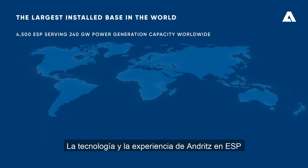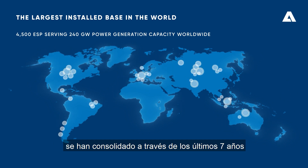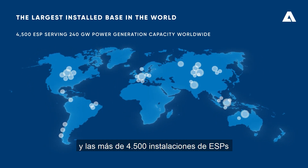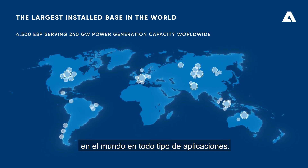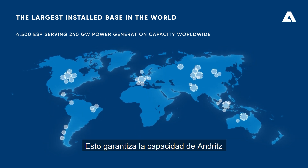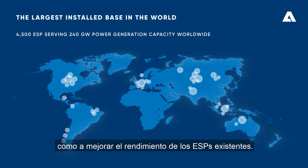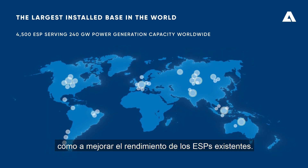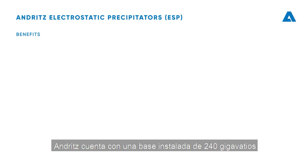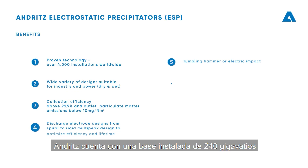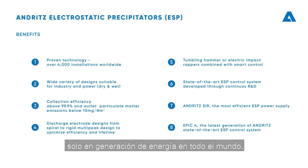ANRITS ESP technology and know-how have been established for over 70 years and more than 4,500 ESP installations around the world across all applications. This ensures ANRITS can support you both with new ESPs and performance improvement of existing ESPs. ANRITS has an installed base in power generation alone of 240 gigawatts globally, and more than 630 ESPs used for pulp and paper processes.